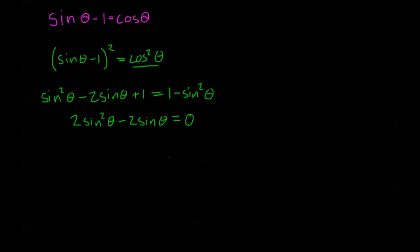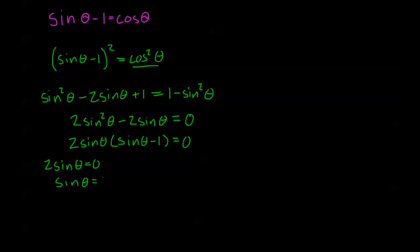Now we can factor out 2 sine theta to get 2 sine theta times sine theta minus 1 equals 0. Finding solutions for one period: 2 sine theta equals 0 means sine theta equals 0, so theta equals 0 and π.